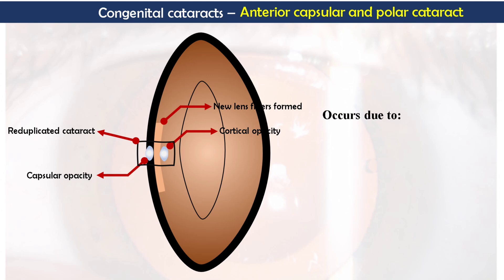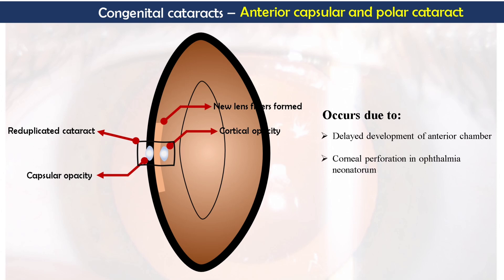These opacities can arise due to delayed development of the anterior chamber, corneal perforation in ophthalmia neonatorum where the lens capsule comes in contact with the cornea and leaves opacification of the central anterior lens capsule, or Peter's anomaly due to delayed separation of the lens placode from the surface ectoderm. Anterior capsular and polar cataract opacities are usually non-progressive and rarely interfere with vision.